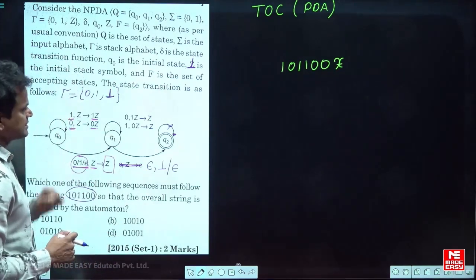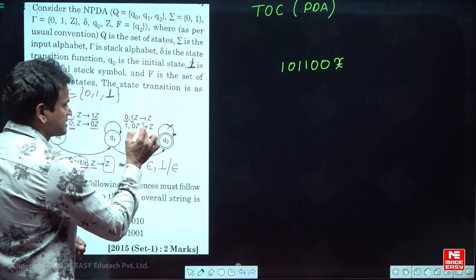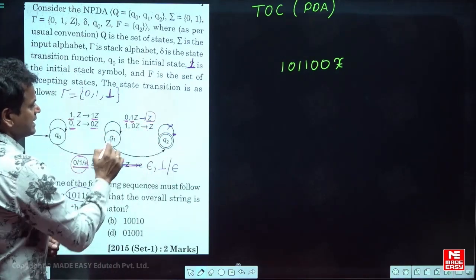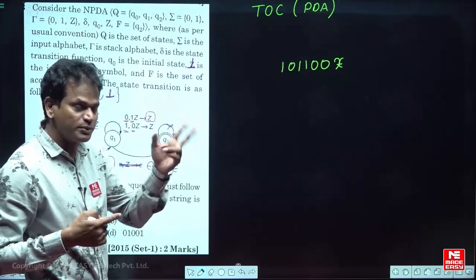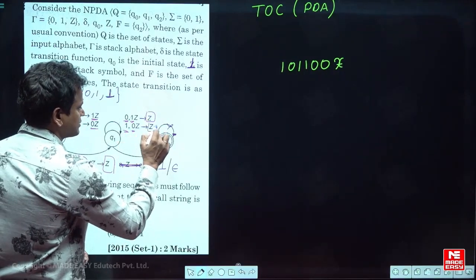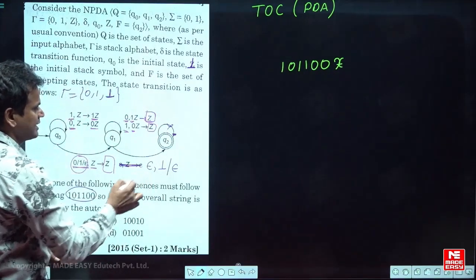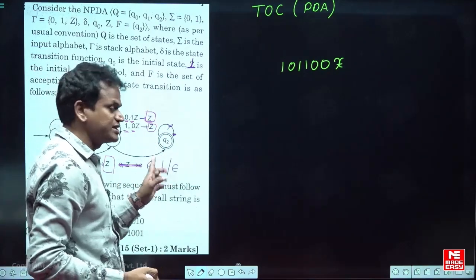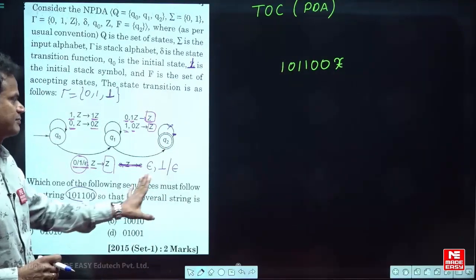Once you change the state, opposite symbols get deleted. If the present input is 0 and the top of the stack is 1 (opposite symbol), you delete that 1. If the present input is 1 and the top is 0, you delete that 0. And finally, when the string is empty and the top symbol in the stack is ⊥ (the initial stack symbol), it will be accepted — go to the final state.